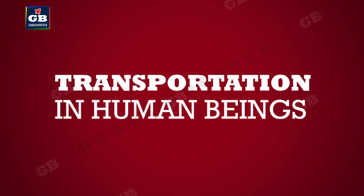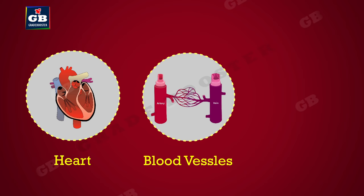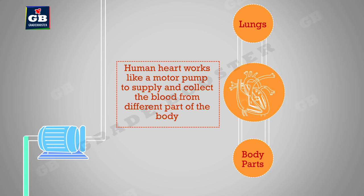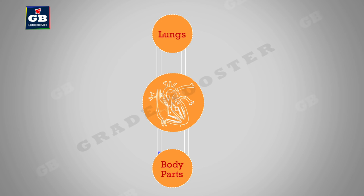Transportation is the life process that helps in the transport of materials in nutrition, respiration, and excretion. Heart, blood vessels, and blood are the parts of our transport system. Just as an electric pump pushes water in pipes, the heart pumps blood in blood vessels to different parts of the body. The heart is a muscular four-chambered organ about the size of our fist, and it has to do two different jobs.